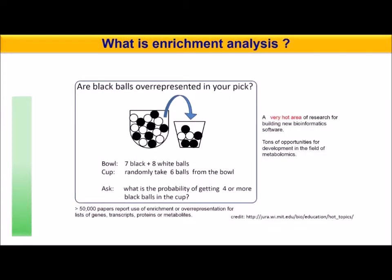One approach to interpret metabolomics datasets is enrichment analysis. The basic idea is explained with a picture: we have a population of black and white balls in a bowl — seven black and eight white balls. We take a random sample of six balls in a cup and ask: what is the probability of getting four or more black balls? This tells us if black balls are over-represented in our sample. It's a very active area of research with many opportunities for development in metabolomics.